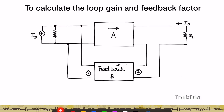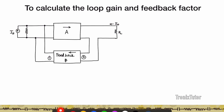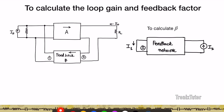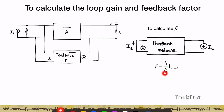Let's look at how to calculate the impact of loading of the feedback network. Once you identify the open-loop part of the circuit and the feedback network, you need to identify the value of beta and assess how the feedback network loads the output and input. To find beta, note that it is sampling an output current and giving a corrective feedback signal which is also a current. So to measure beta, short the output and measure the gain between the short-circuit output current and the input current. That gives the value of beta, which has units of ampere per ampere.